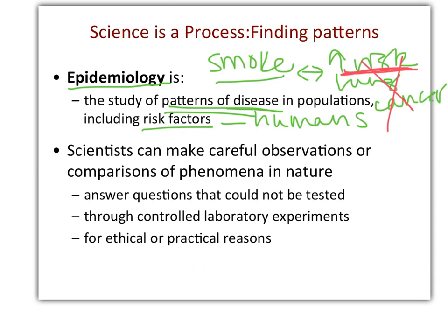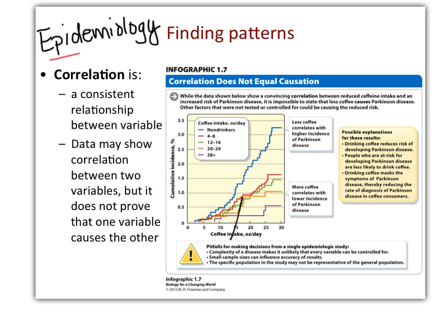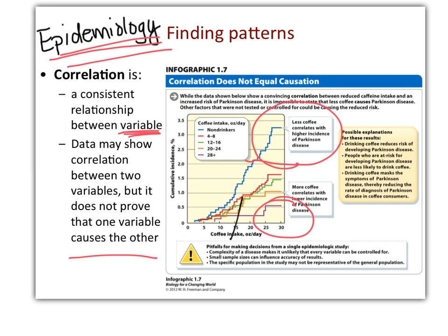The other epidemiology that's not human-based would be phenomena in nature that you can't recapitulate in a laboratory. Global warming: we can do lots of experiments suggesting how particulates in the air can cause warming in the lab, but on a planetary scale we can't do that. So that's making observations and comparisons in nature to find correlation — that's not causation. Epidemiology is always correlation: a relationship between a variable, like smoking, and something else, like lung cancer. In this example, they're talking about drinking coffee and risk of Parkinson's, and this correlation suggests that the less coffee you drink, the higher the incidence of Parkinson's; the more coffee you drink, the lower the incidence of Parkinson's.